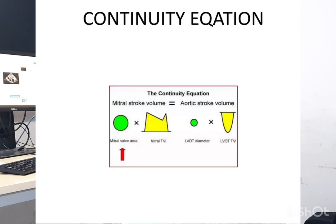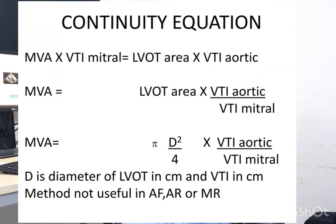For the continuity equation, what comes in goes out — mitral valve stroke volume equals LVOT stroke volume. The formula is: mitral valve VTI × mitral valve area = LVOT VTI × LVOT area. Rearranging: mitral valve area = (LVOT area × LVOT VTI) / mitral valve VTI. This method is not reliable in patients with significant MR or significant AR.